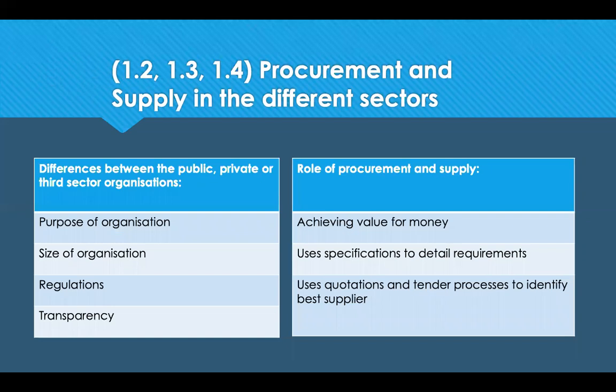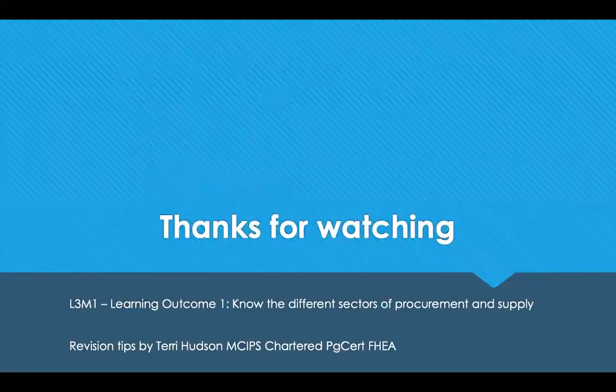In summary, public, private and third sectors all have different purposes: public sector provides essential services, private sector operates for profit, and third sector creates social wealth. They vary in size from micro sole traders to large multinationals. The public and third sectors face heavier regulations and transparency requirements. Regardless of sector, the role of procurement is to achieve value for money, use specifications to detail requirements, and use quotes and tenders to identify the best supplier. Thank you for watching.